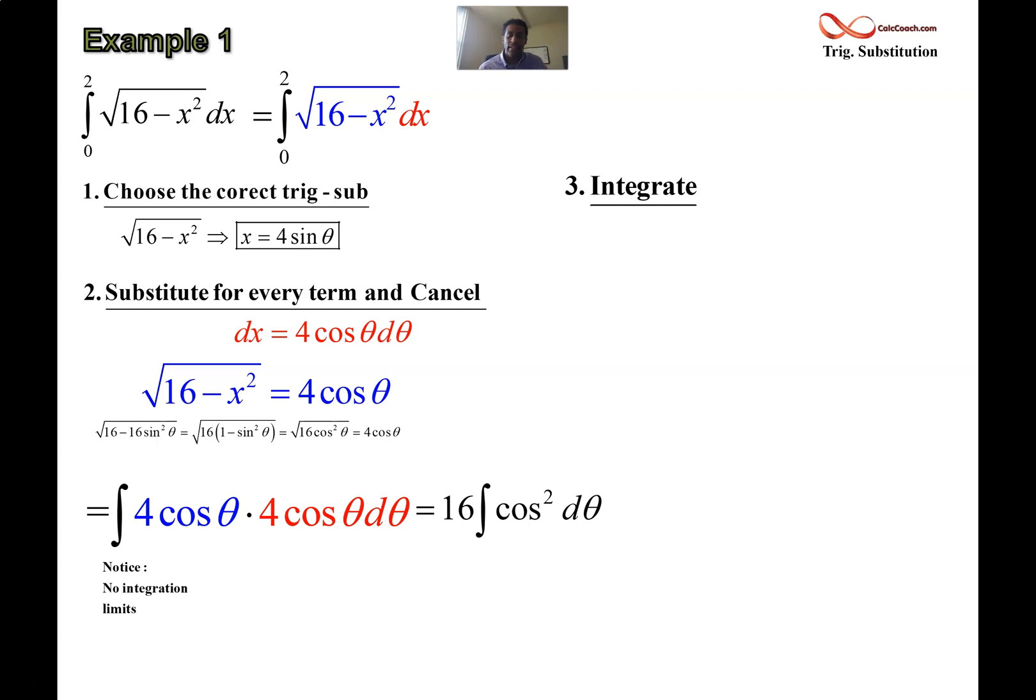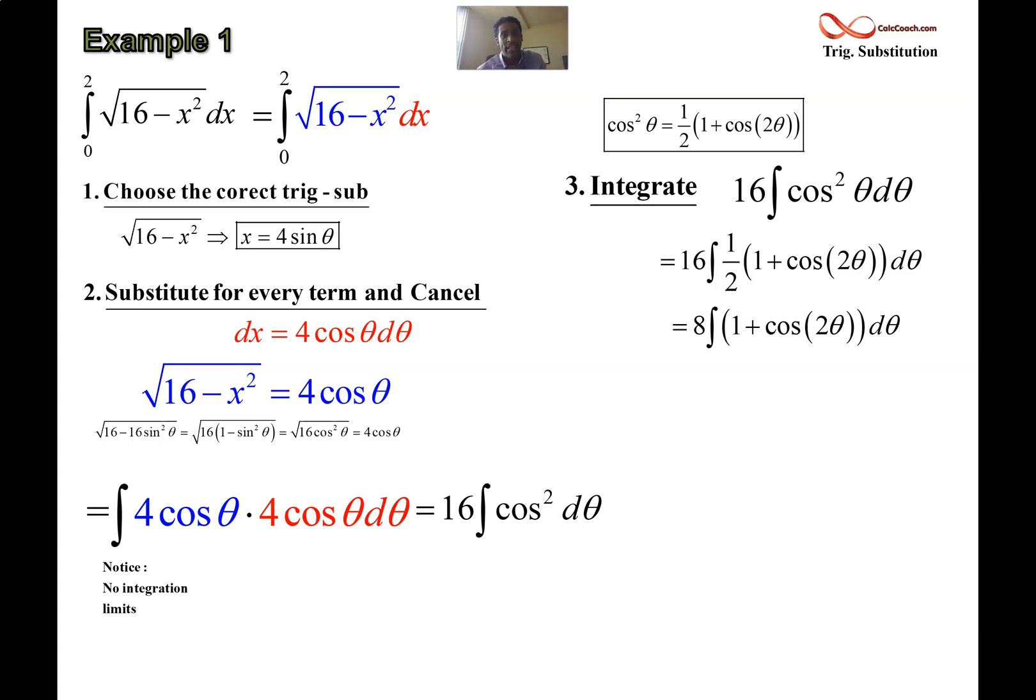To integrate cosine squared, you need a previous technique about integrating powers of trig functions. When the power of cosine is even and there are no sines around, you need to use a half-angle identity. You replace cosine squared with one-half the quantity of one plus the cosine of double theta. Why? Because you can integrate it. Once you put that in, pull the half out with the 16, you got an 8 out there. You integrate 1 with respect to theta and cosine 2 theta with respect to theta. We get theta as the antiderivative of 1 and half of the sine of 2 theta as the antiderivative of cosine 2 theta.